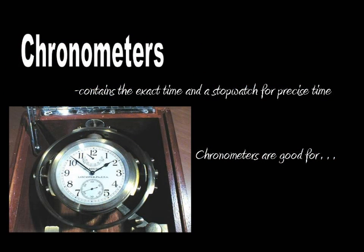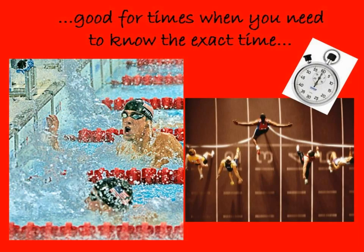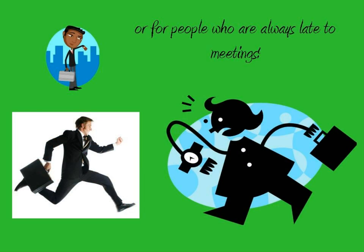The next time you want to buy a watch, buy a chronometer instead. A chronometer is a very accurate timekeeping device that is used for determining one's longitude at sea, but I think they are also useful for moments like this — when Phelps beat another swimmer by only one hundredth of a point. They are also good for people who are always late to meetings in school.